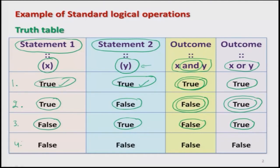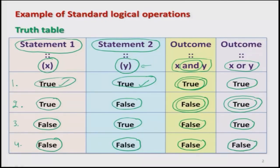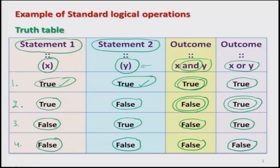The last situation is where both statements 1 and 2 are false. Checking what happens to statement 1 AND statement 2 simultaneously — this comes out to be false. Then checking the OR operator: if statement 1 is false and statement 2 is false, the outcome is also false. This table is called the truth table, and all logical operations are based on it.